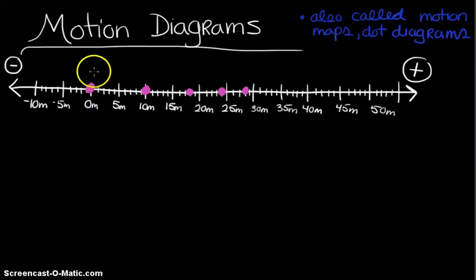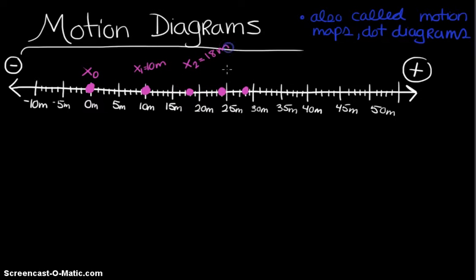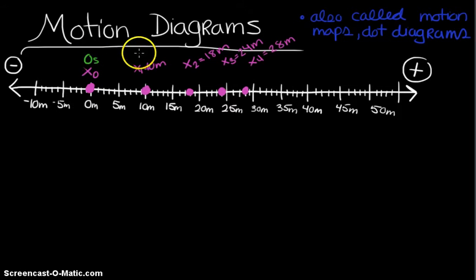In the next example, let's look at one where the velocity does change. Imagine an object that starts at the zero meter mark — I'll label x initial as zero meters. x1 is at 10 meters, x2 is at the 18 meter mark, x3 appears to be at the 24 meter mark, and x4 is at the 28 meter mark. These dots represent where the object is at the zero, one, two, three, and four second clock readings respectively.